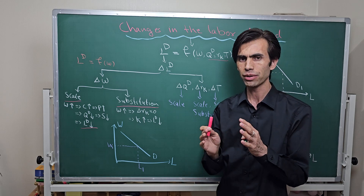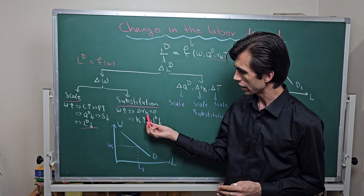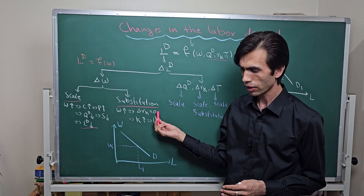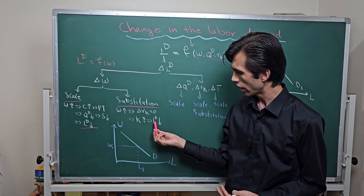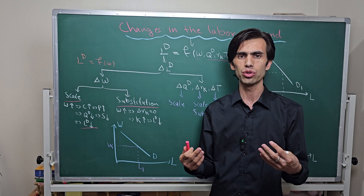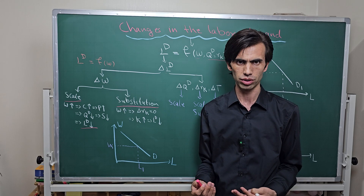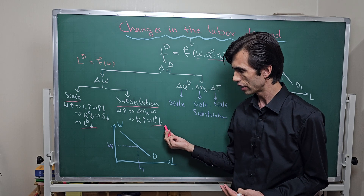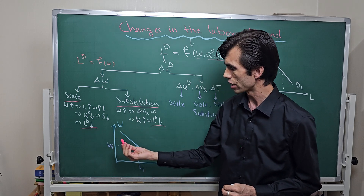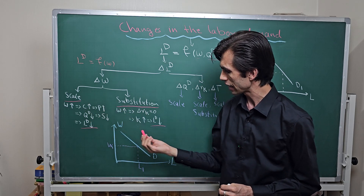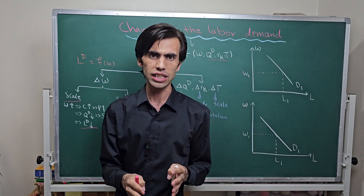In case of the substitution effect, when the wage level increases, if the company wants to maintain the current level of output — and assuming the change in rental price of capital is equal to zero — the firm will try to substitute labor with capital. Instead of using more labor, the firm will use more capital and produce the same level of output. So the demand for labor will decrease. Overall, with a change in wages, both substitution effect and scale effect move in the same direction: an increase in wages decreases overall labor demand.